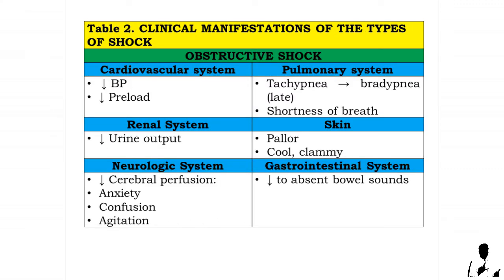Signs and symptoms under obstructive shock — cardiovascular system: decreased blood pressure and decreased preload. Pulmonary system: tachypnea that may lead to bradypnea as a late sign, and shortness of breath. Renal system: decreased urine output. Skin: pallor, cool, and clammy.